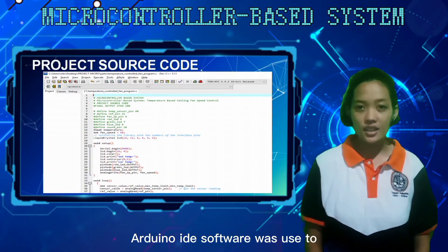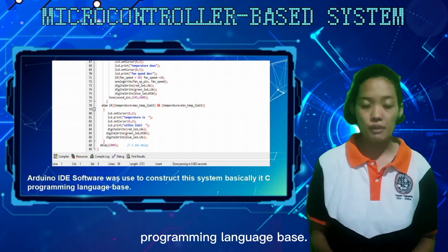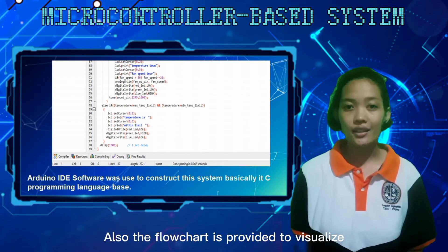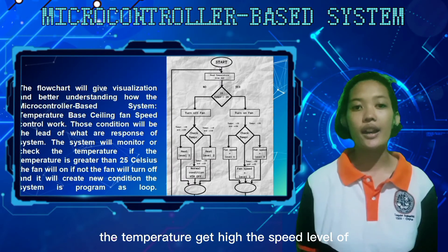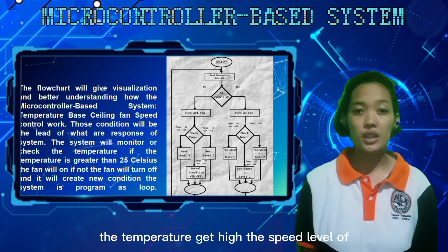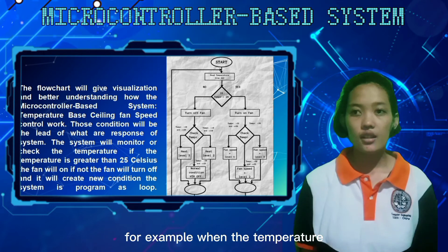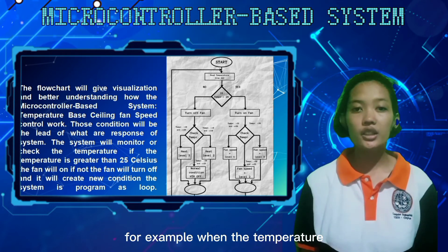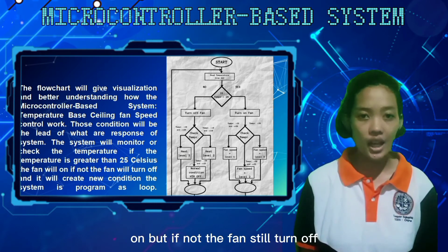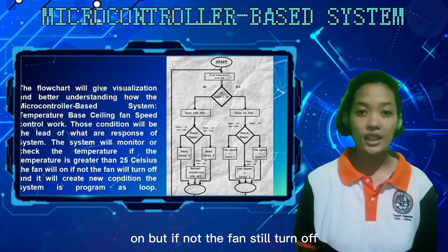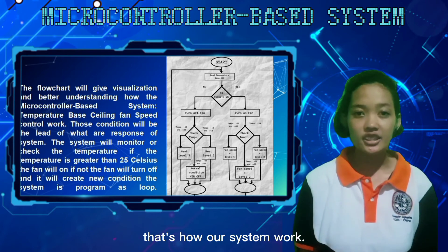Arduino IDE software was used to construct this system. Basically, it is C programming language based. A flowchart is provided to visualize how the system works. When the temperature gets high, the speed of the ceiling fan will also get high. For example, if the temperature is greater than 25 degrees Celsius, the fan will turn on at higher speed. If not, the fan will remain on at lower speed. That's how our system works.